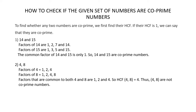Now consider the two numbers 4 and 8. The factors of 4 are 1, 2, and 4. The factors of 8 are 1, 2, 4, and 8. The factors common to both 4 and 8 are 1, 2, and 4. So the HCF of 4 and 8 is 4. Since the HCF is 4 and not 1, the numbers 4 and 8 are not co-prime numbers.